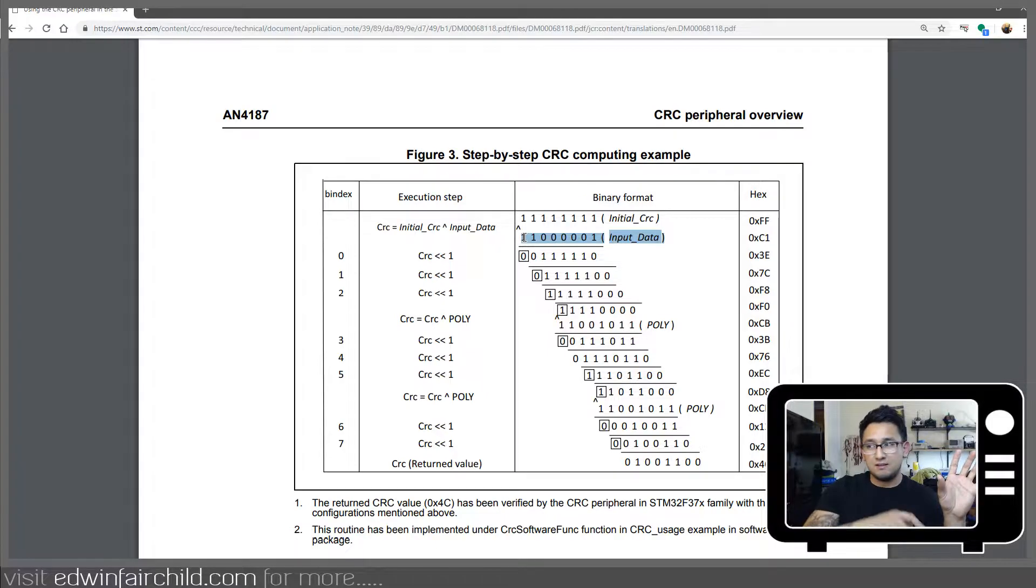If at any time along this entire process, one single bit of your data changes or is corrupt, then that final value is not going to match, right? What I'm trying to say is that you're going to run this algorithm on your data before you send it. And then you're going to send your data to the other side, to whoever's receiving it. You're going to send your data along with this number that we're going to generate. And then once the data is received on the other side, they're going to get that number that you sent and they're going to get your data. Then they're going to run that same algorithm that you ran on your data to see if they get the same number.